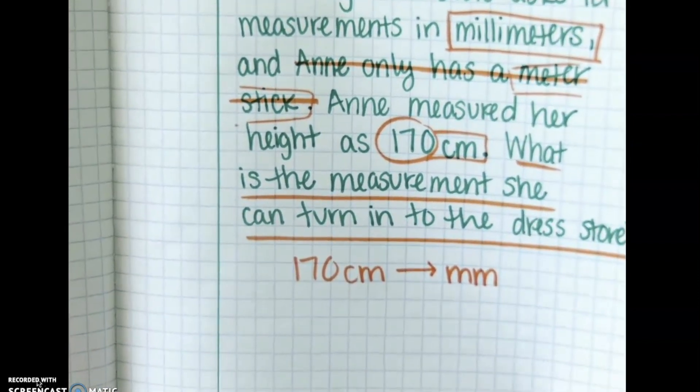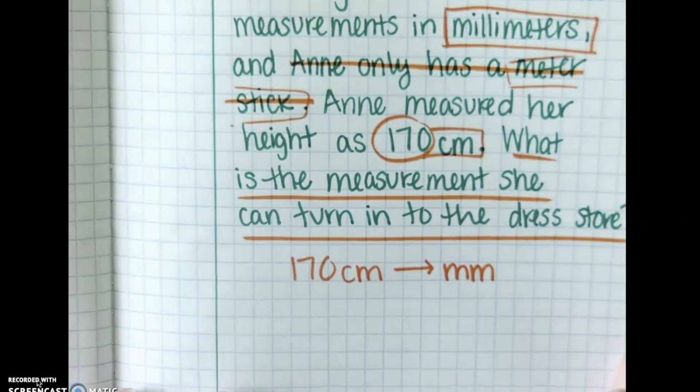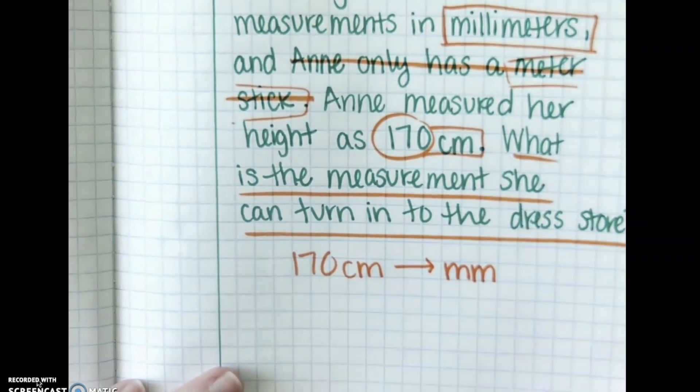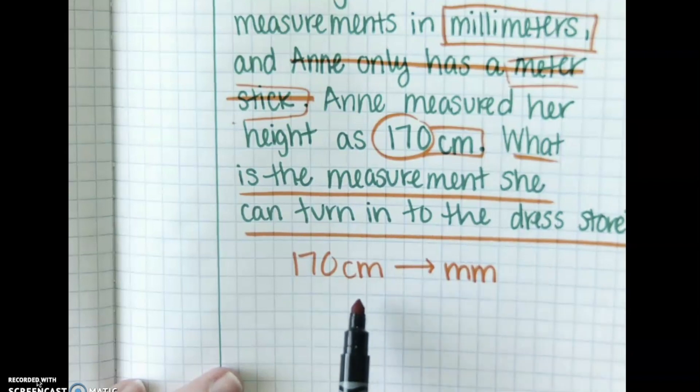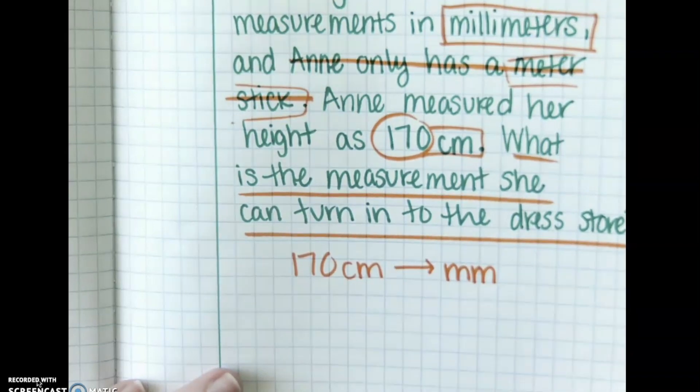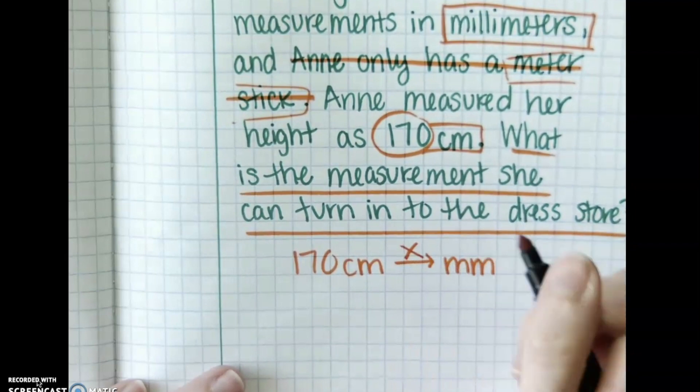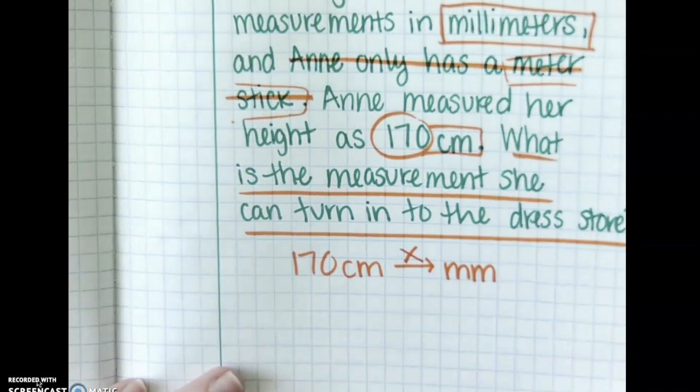Let's go through our steps in converting units. First of all, which operation do I need to use. I'm going from centimeters to millimeters. That is a larger unit to a smaller unit so I am going to multiply in that case. Larger to smaller means multiply. But what am I multiplying by?